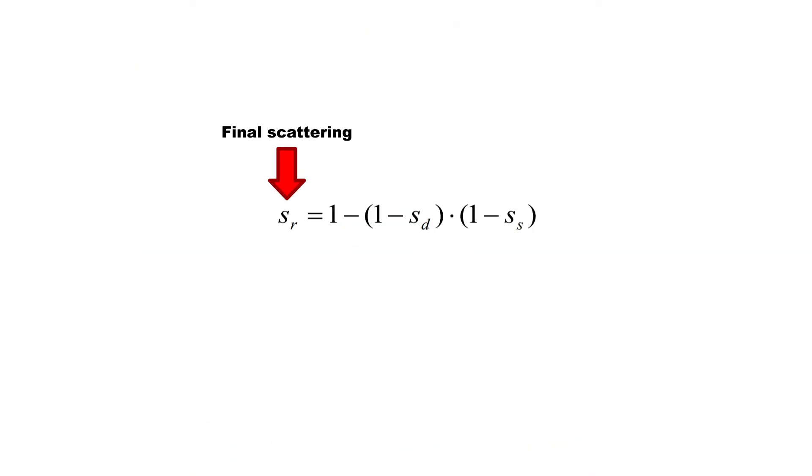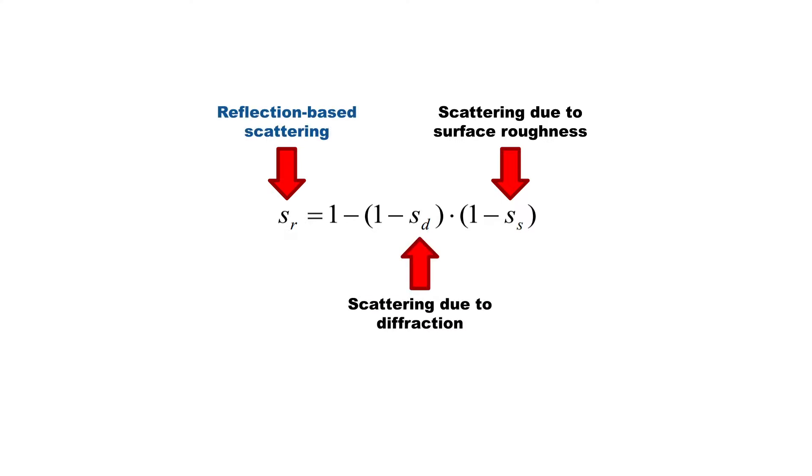The final scattering is a combination of the user-defined scattering due to surface roughness and the scattering due to diffraction. We call this the reflection-based scattering, as it is calculated for each individual reflection during runtime.